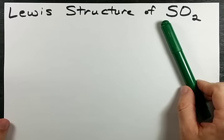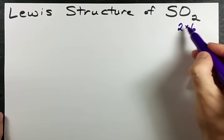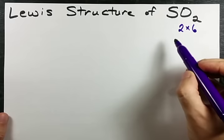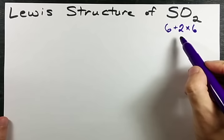The first thing I like to do for Lewis structures is count the number of valence electrons. Oxygen is in group 16, and each oxygen brings 6 electrons with it. There are 2 of them, so that contributes 12 electrons total. Sulfur is in the same column or group, and so it also brings 6 valence electrons with it. In total, 6 and 6 and 6 give us 18 valence electrons.